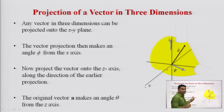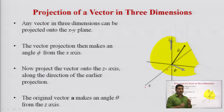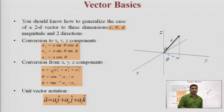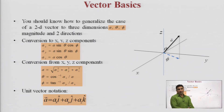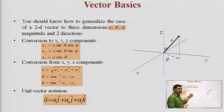You can visualize the projections of a vector on the horizontal and vertical planes, which can be described in terms of phi and theta. Any vector in three dimensions can be projected onto the x-y plane where the projection makes an angle phi from the x-axis. Then projecting the vector onto the z-axis, the original vector A makes an angle theta with the z-axis. These projections are very important to understand.